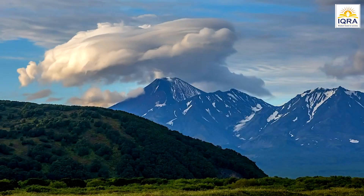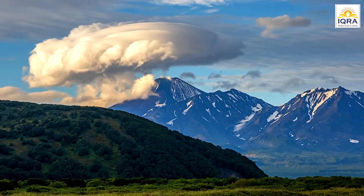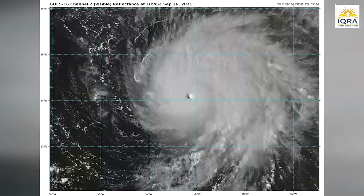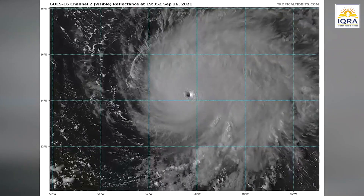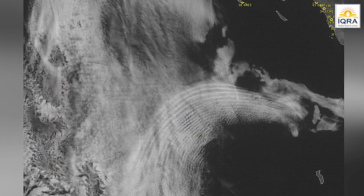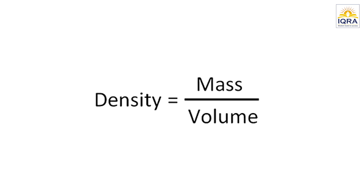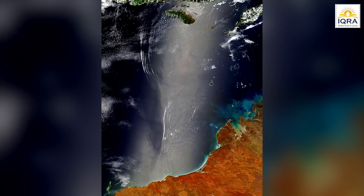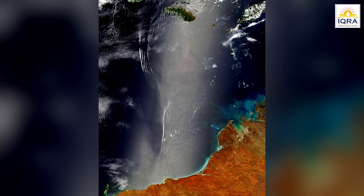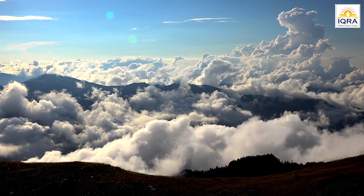Gravity waves are waves which form as a result of density differences in the atmosphere. Density is related to air pressure, temperature, and humidity — density is a measure of how much mass is in a unit volume. Sometimes, in the atmosphere, something happens that upsets these layers and you get waves as a result.